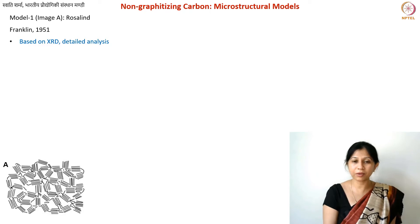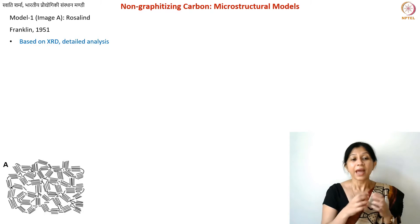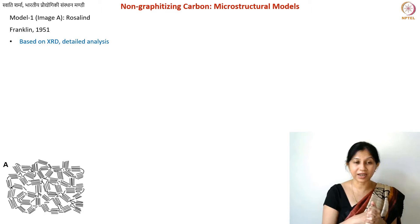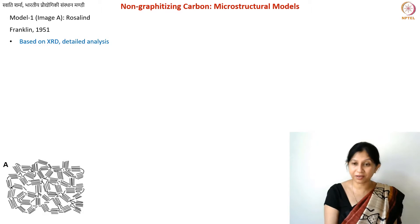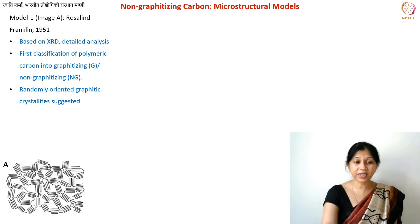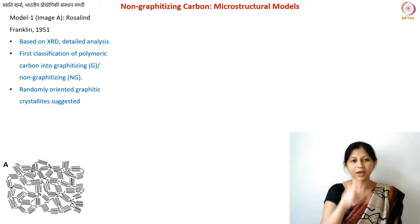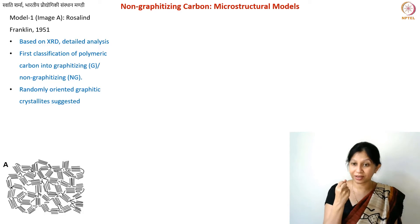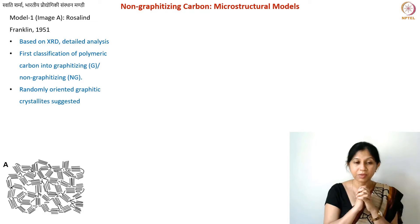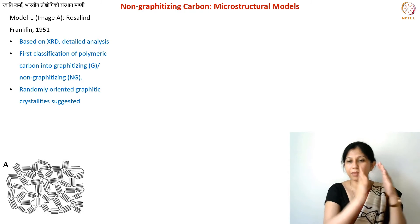At that time, TEM existed in the 1950s but was not as common as today; the technique was still in its developmental phase. X-ray diffraction was the most common technique for understanding carbon materials. Franklin's study is a very detailed analysis of how to perform XRD studies for carbon materials. She suggested that non-graphitizing carbons have randomly oriented graphitic crystallites at the nanoscale — short-range crystallites between two and five nanometers, not larger than ten nanometers — with exact size depending on heat treatment temperature.